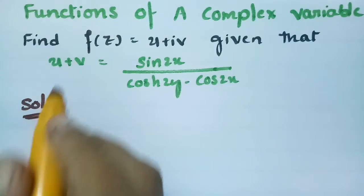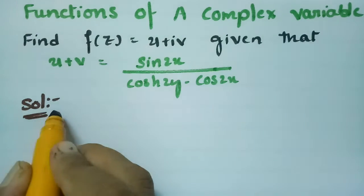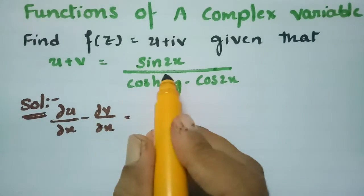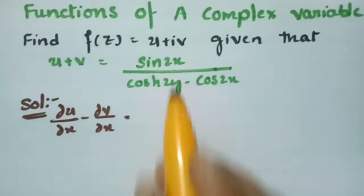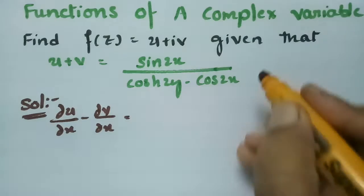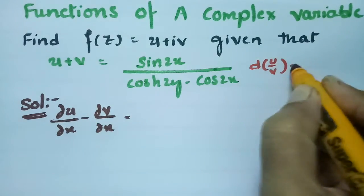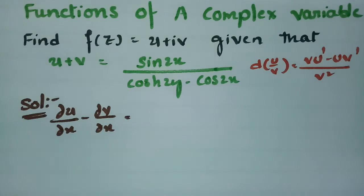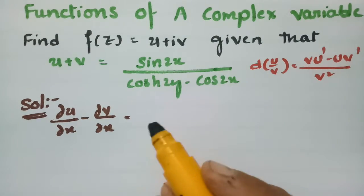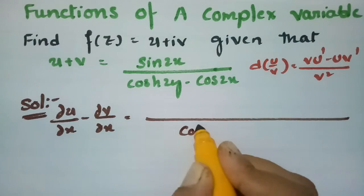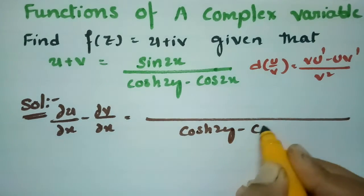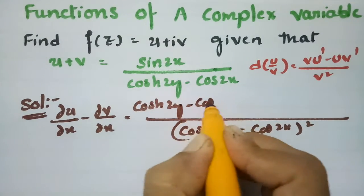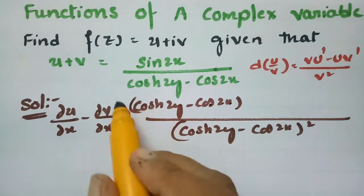For that I need a derivative with respect to x. So if I differentiate with respect to x, that gives dou(u)/dou(x) - dou(v)/dou(x). I am using the quotient (uv) rule. The derivative of u/v is (v·u' - u·v') / v². Here u = sin(2x) and v = cosh(2y) - cos(2x), so the denominator becomes (cosh(2y) - cos(2x))² and the numerator involves differentiating with respect to x.